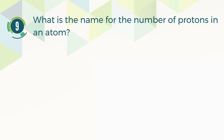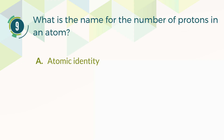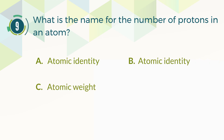Number 9. What is the name for the number of protons in an atom? A. Atomic identity. B. Atomic mass. C. Atomic weight. D. Atomic number.